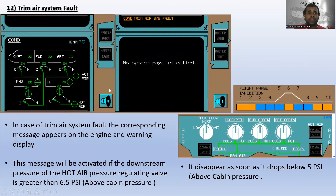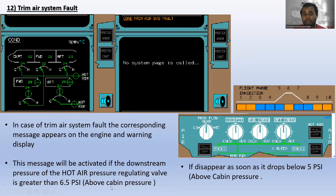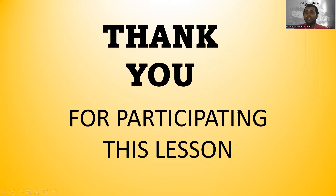In case of trim air system fault, the corresponding message 'trim air system fault' appears on the engine and warning display. This message is activated when the downstream pressure of the hot air pressure regulating valve is greater than 6.5 psi above cabin pressure. The message disappears as soon as the pressure drops below 5 psi above cabin pressure.